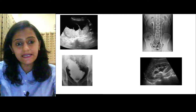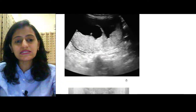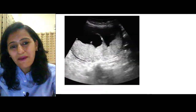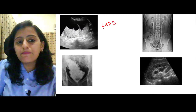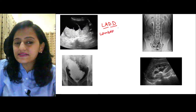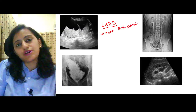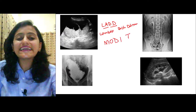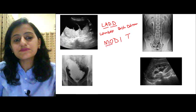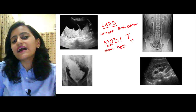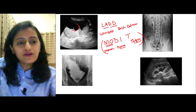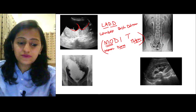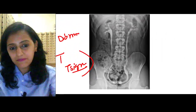Genitourinary — very important for NEET PG. First image shows the lambda sign — dichorionic diamniotic twins. Mnemonic: lambda = DCDA. The other mnemonic: Modi T — monochorionic diamniotic twins show the T sign. Next image: IVP showing cobra head or bladder head appearance of the ureter in the distal part — seen with ureterocele.